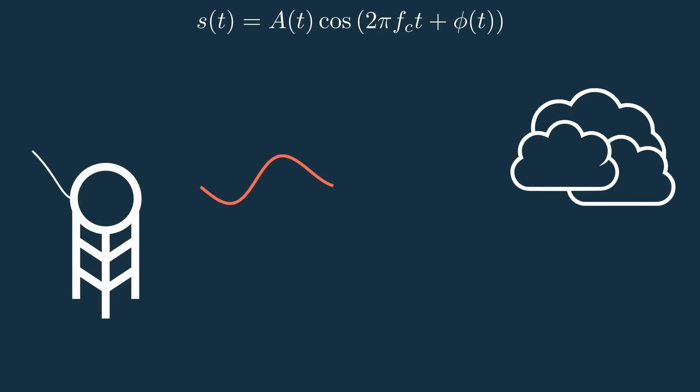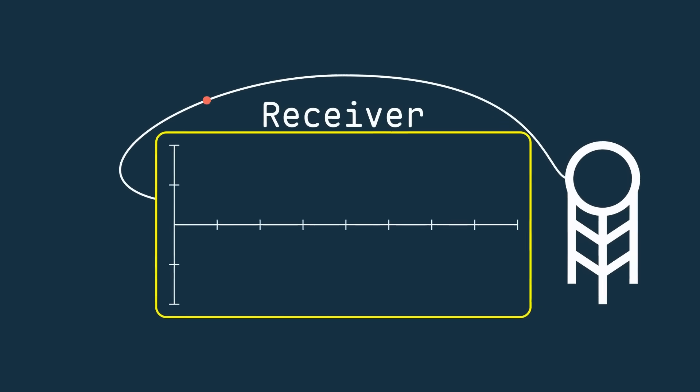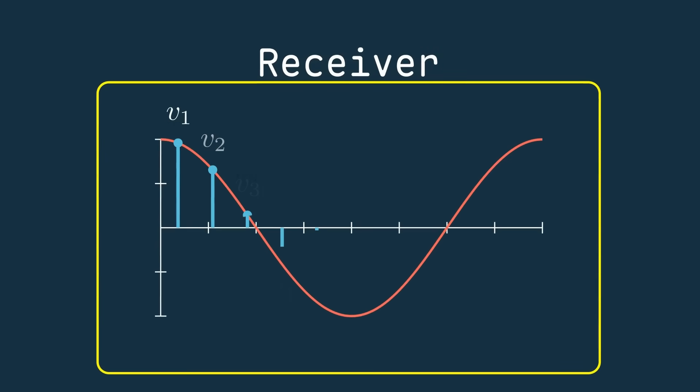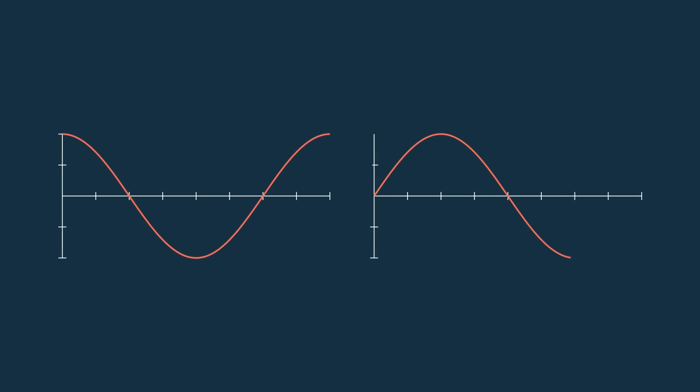Unfortunately, when we sample the received analog cosine wave to digitize it, we capture only a single amplitude per sample. And a single amplitude sample on either a cosine or sine wave isn't enough to tell us where in the cycle we are. Let me explain why.